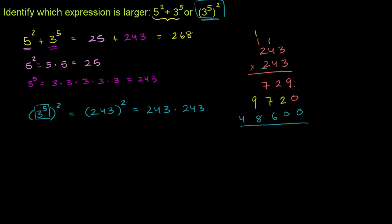So let's add everything up. We get just a 9 there. 2 plus 2 is 4. 7 plus 7 is 14, plus 6 is 20. 2 plus 9 is 11, plus 8 is 19. 1 plus 4 is 5. So you get 59,049, which is clearly way bigger than 268. This expression right here is 59,049.